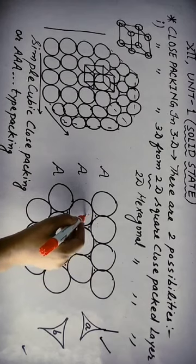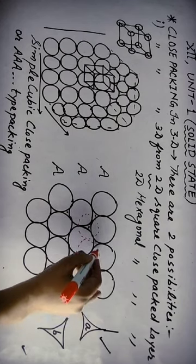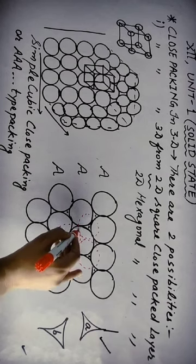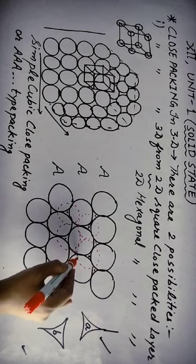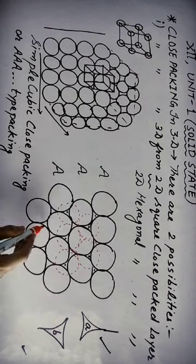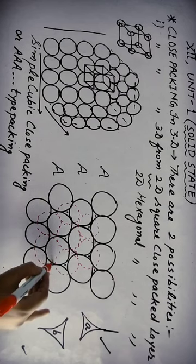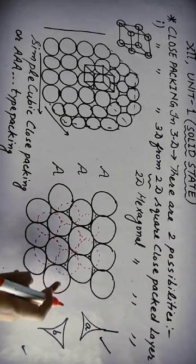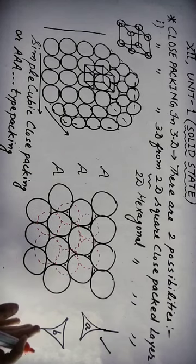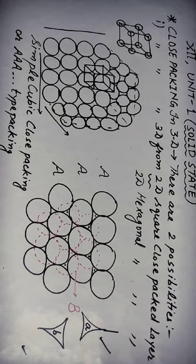The second layer particles are placed covering the void B positions, shown here in dotted red form. These second layer particles are neither horizontally nor vertically aligned with the first layer — they have a different alignment. The second layer spheres are denoted as B type.